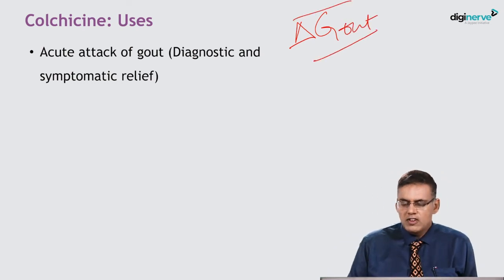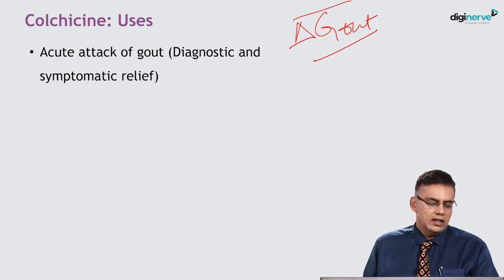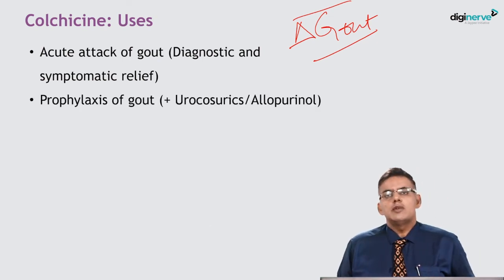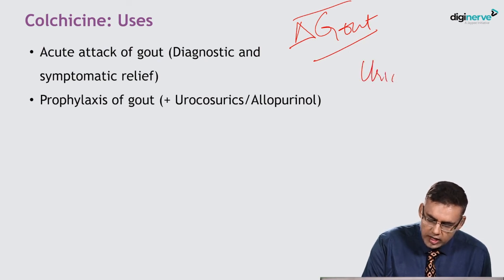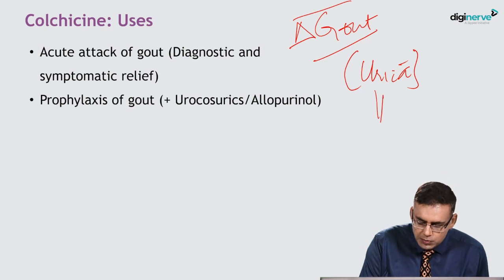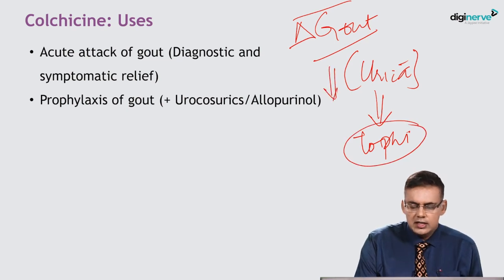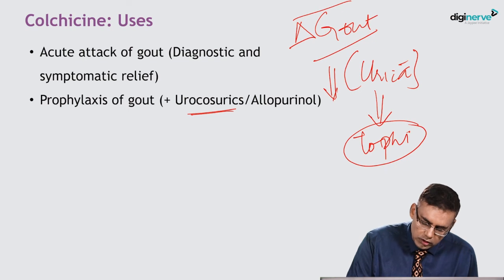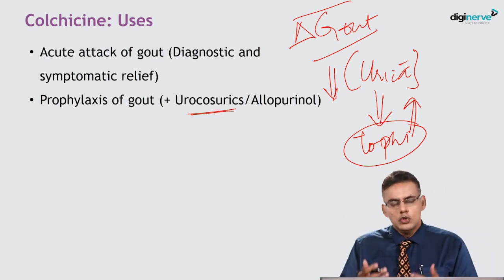Colchicine produces pain relief, but be careful because it carries the risk of hemorrhagic or bloody diarrhea, as well as agranulocytosis and azoospermia. It can also be used in prophylaxis of gout when combined with uricosuric agents or allopurinol. When using uricosuric agents, be aware that decreasing uric acid in the blood will cause the body to maintain equilibrium — tophi will melt and release uric acid into the circulation, resulting in hyperuricemia. Therefore, uricosuric agents can at times precipitate acute gout.